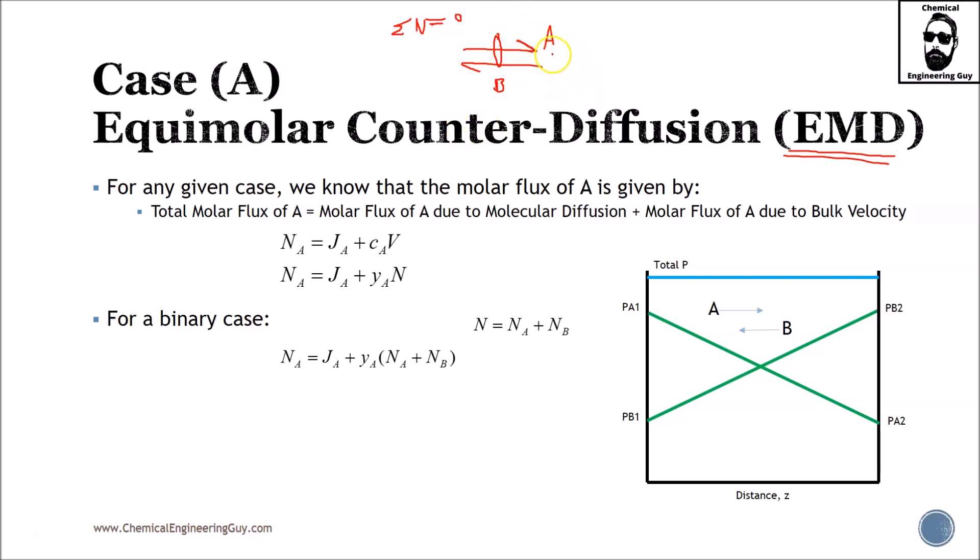But actually we have molecular diffusion, meaning that the concentration of A will decrease in this side and will increase in this side. And the same is true for B. The concentration of B will be decreasing and the concentration of B will be increasing right here. So try to imagine cases in which you could have that, especially for gases.